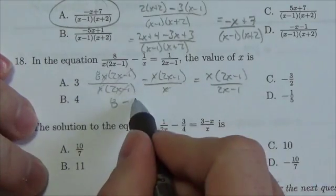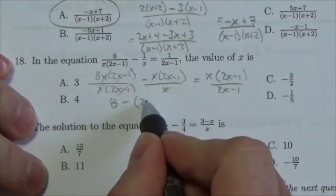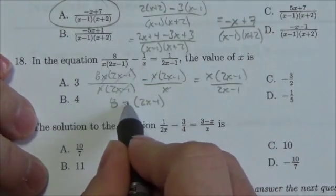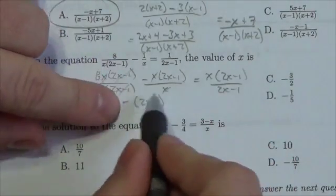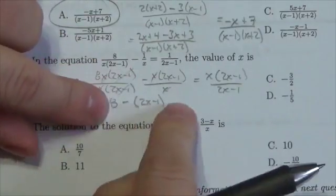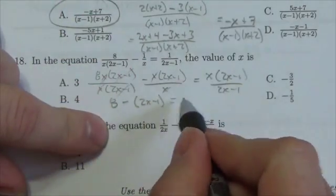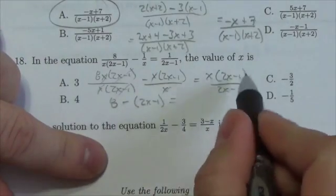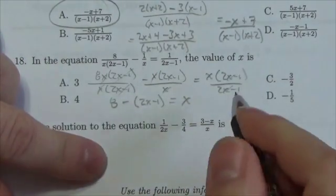Minus, the x's cancel, and now in parentheses I'm going to put the 2x minus 1, because that negative, I'm subtracting the whole thing, not just the first term, the whole thing. So I've got to make sure there's brackets there. And on the right hand side it's just going to be equal to x, because the 2x minus 1's will cancel.